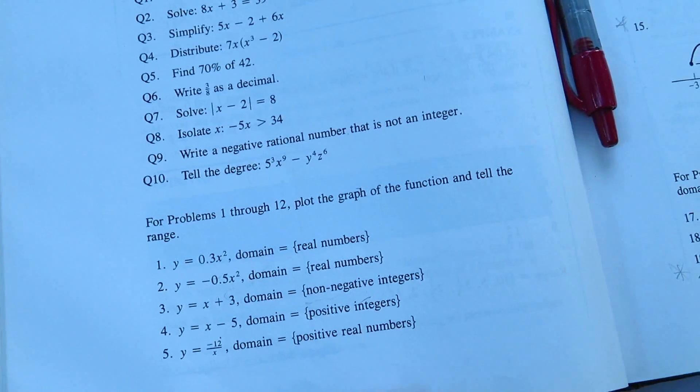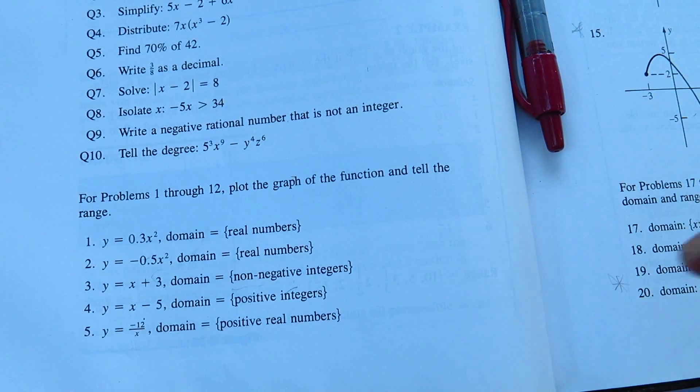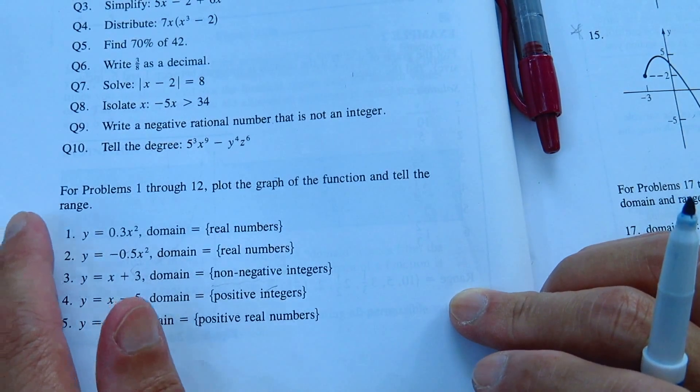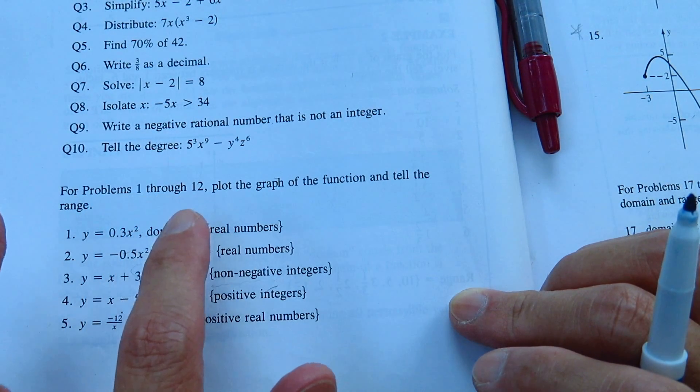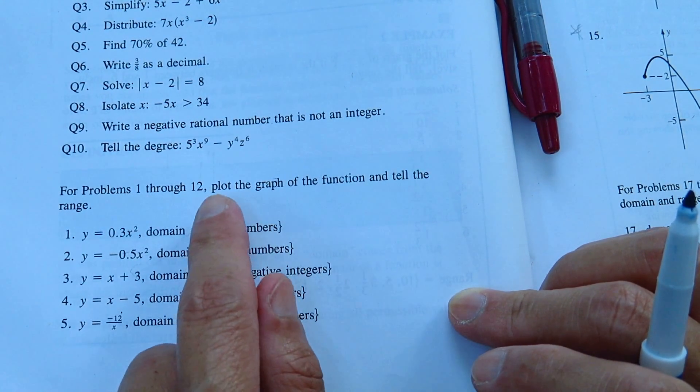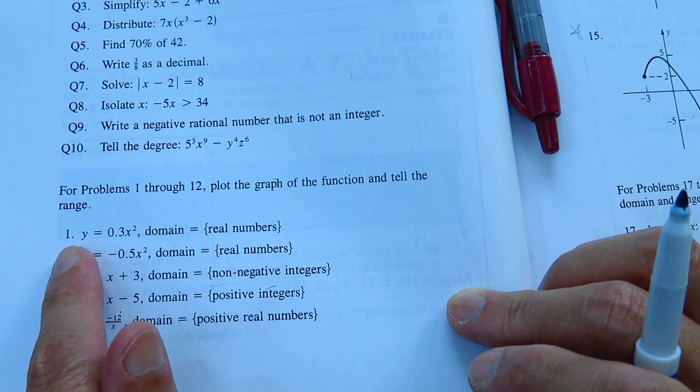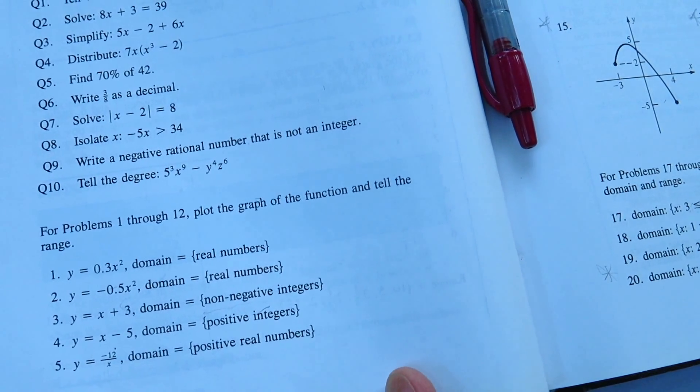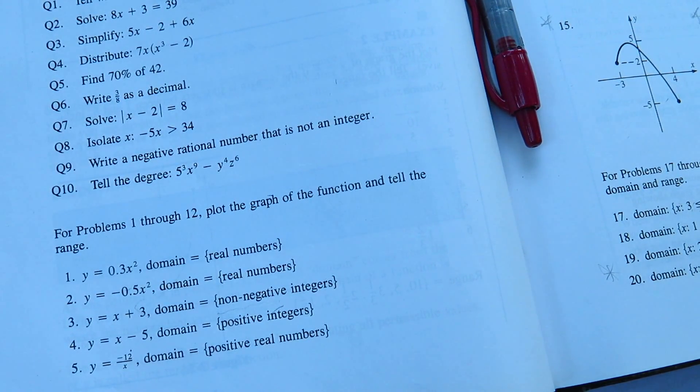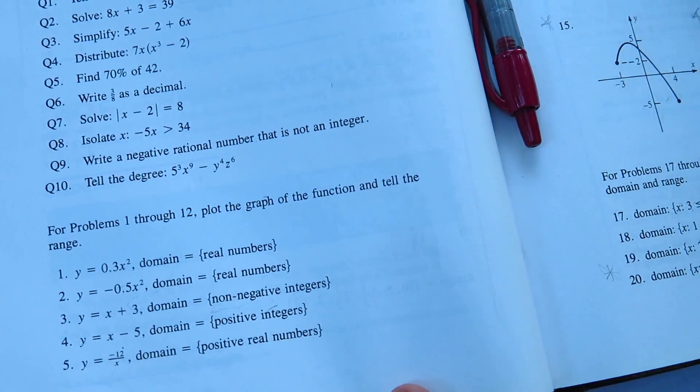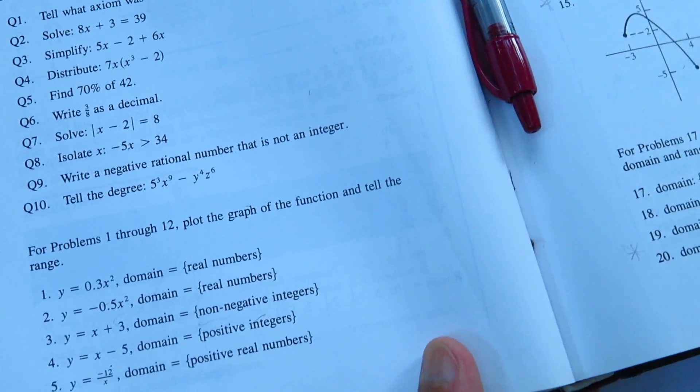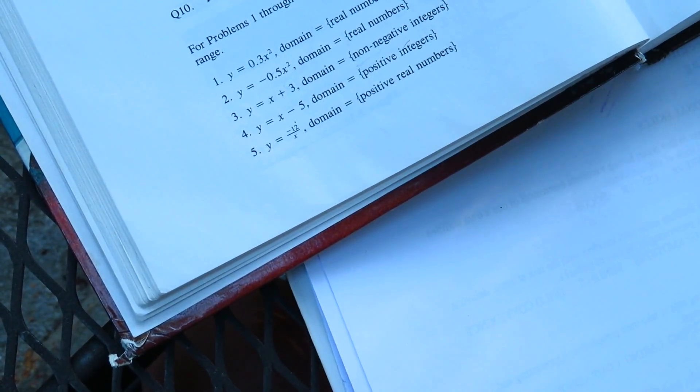Okay, hello dear friends. Let's continue to do some problems. For problem 1 through 12, plot the graph of the function and tell the range. So we do only the odd numbers, because there is an answer for the odd numbers. I make sure that I do it right. So the first one, I will copy the problem.